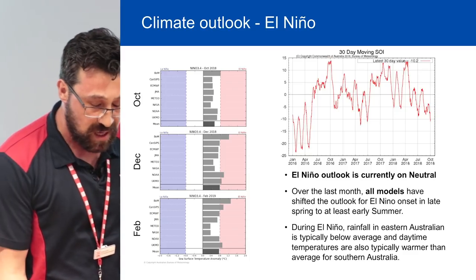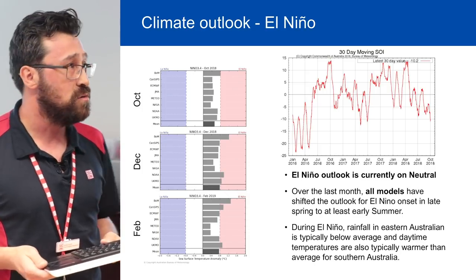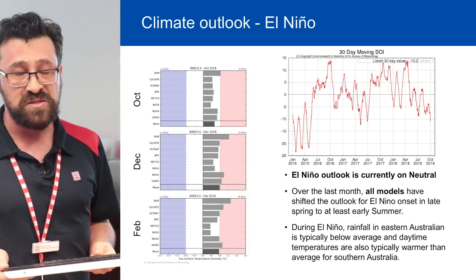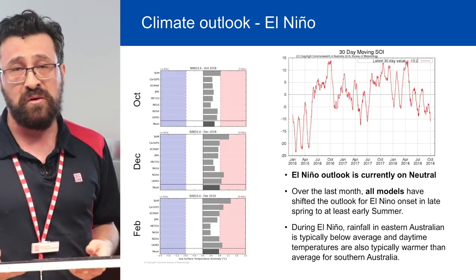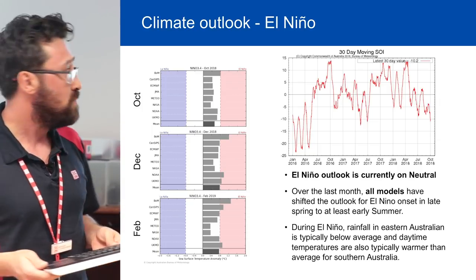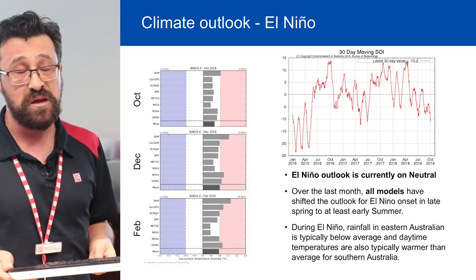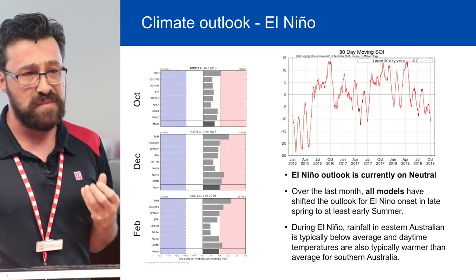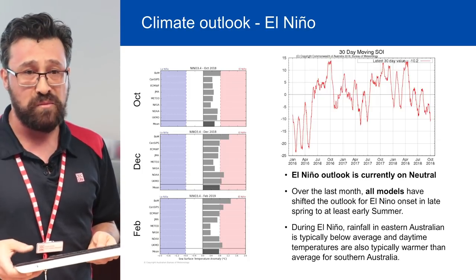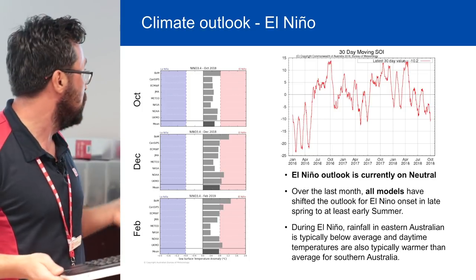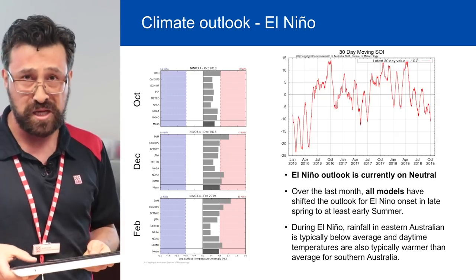Looking at El Niño to unpack some of those climate signals — global climate models are forecasting an increasing likelihood of El Niño occurring, especially from early to late summer. El Niño hasn't fully activated yet, but the forecast is that it will, with high likelihood and nearly all global climate models signifying a high chance of El Niño conditions, which is typically associated with lower rainfall patterns over southeast Australia.